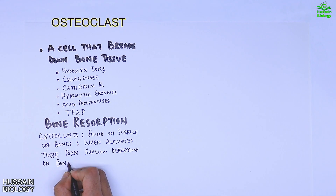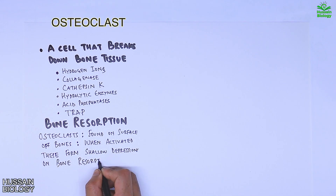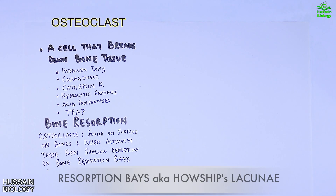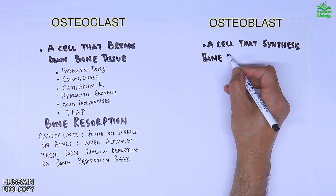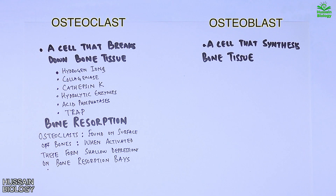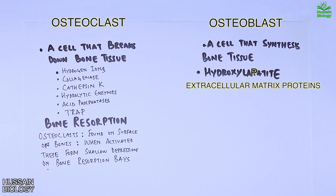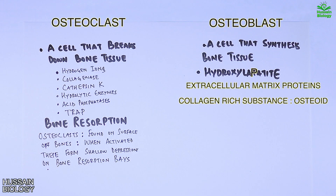When activated, osteoclasts form shallow depressions on the bone surface called the resorption base. Looking at the osteoblast, which synthesizes bone tissue, it mainly secretes hydroxyapatite, extracellular matrix proteins, and the collagen-rich substance called osteoid.